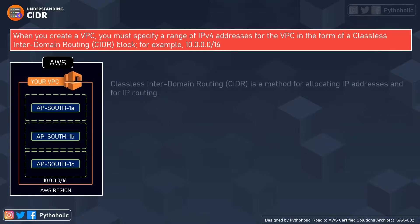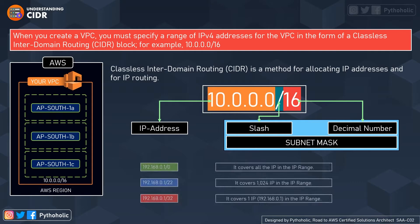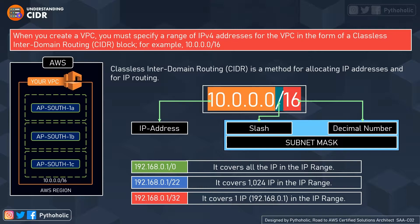CIDR stands for Classless Inter-Domain Routing. 'Classless' means we ignore address classes like A, B, or C and consider the IPv4 address as having two parts: the prefix part and the host part, as defined by the masking values. We don't consider the class here, unlike in classful addressing. This classless addressing is used in inter-domain routing, a type of routing algorithm that works within and between domains.